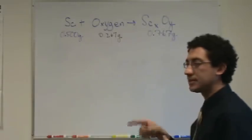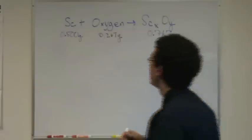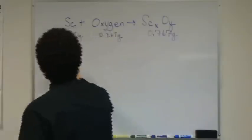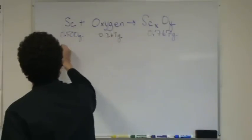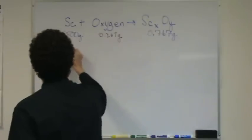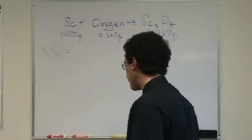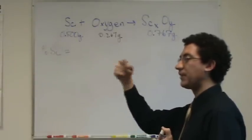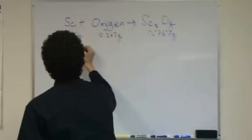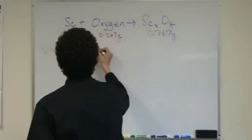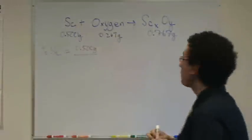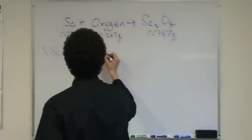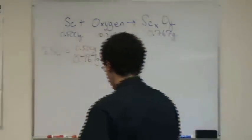Okay, now the next step is to get into the percent composition part of the problem. So, I'll just take it one at a time. I'll start with scandium and go from there. So, percent scandium equals, this is going to be the mass percent of scandium. It's going to be the mass of scandium on top, what we want on top, divided by the total on the bottom. So, that's going to be 0.500 grams on top, divided by the total, which is 0.767 grams, both of which were given in the problem. And I'm going to multiply this by 100%.